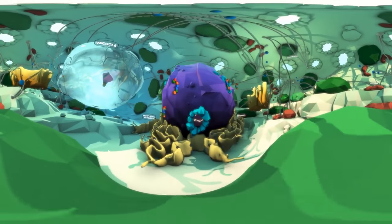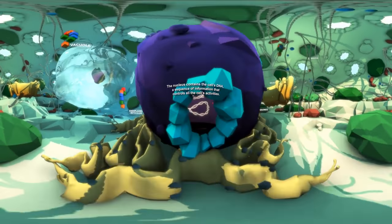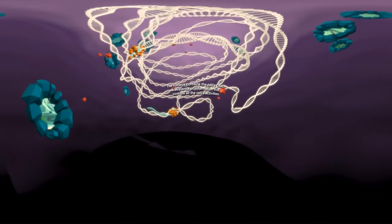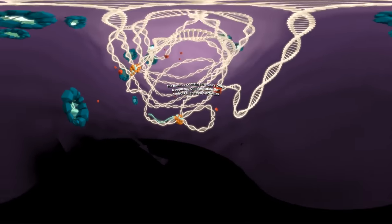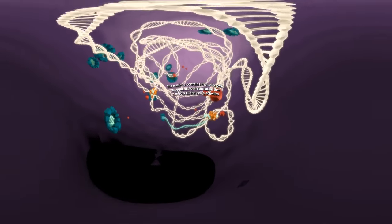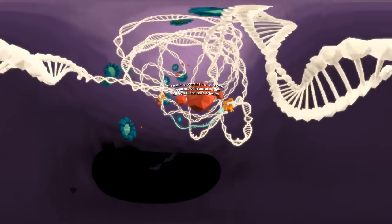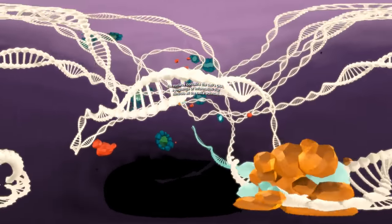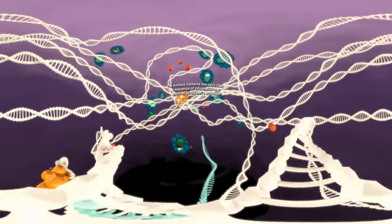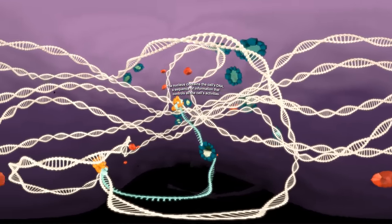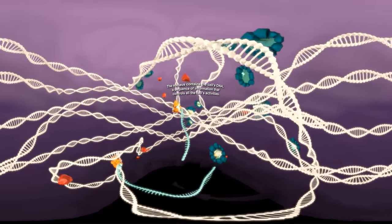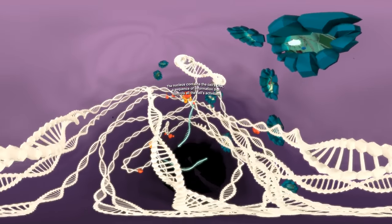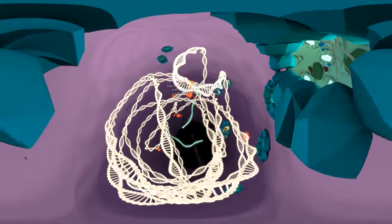You are heading through a nuclear pore and into the plant cell nucleus. The nucleus is home to the cell's DNA, a long string-like molecule. The DNA contains a sequence of information that controls all of the cell's activities.